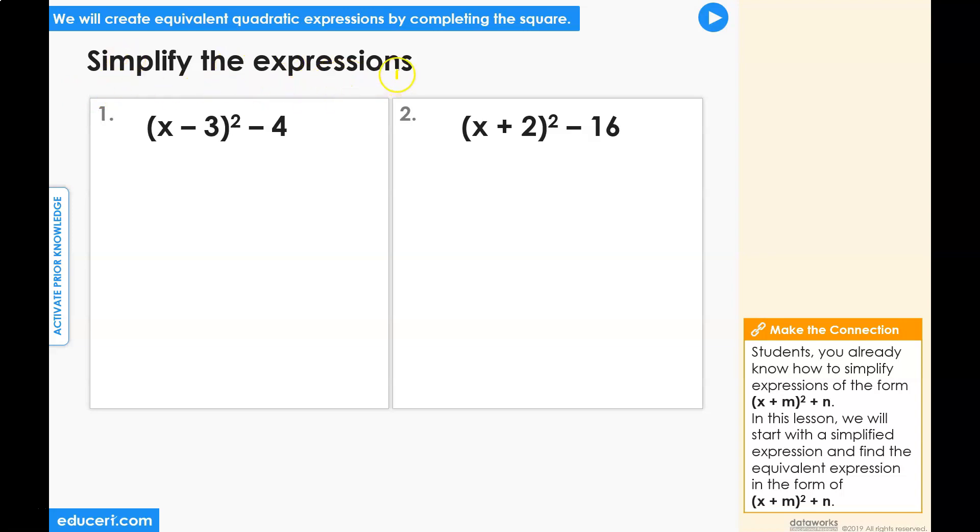Simplify the expressions. Problem number one. We have the quantity x minus 3 squared minus 4.